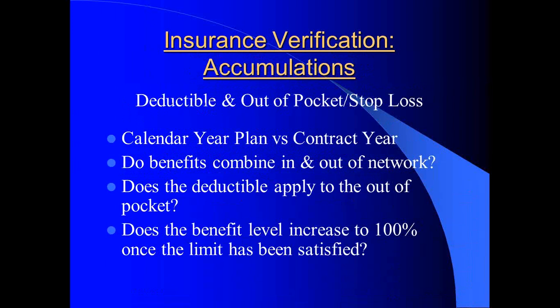I have seen a dramatic increase in benefits that allow cross-accumulation, combining in and out-of-network so the patient can kill two birds with one stone. It doesn't always cross-accumulate in to out-of-network, but when I've seen it, the out-of-network does combine in. So when a patient sees an out-of-network provider, they're getting credit on both sides of the deductible. Ask if the deductible applies to the out-of-pocket, which helps the patient reach that out-of-pocket faster so they then have no responsibility out of their own funds. Always check if the benefit level increases to 100% — on out-of-network I've seen that slip away, creating a very large hardship for the patient.